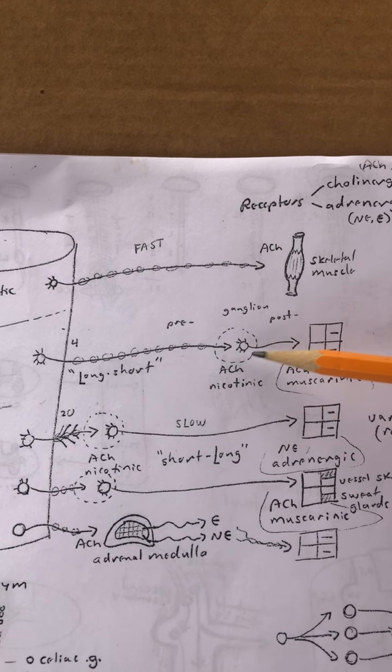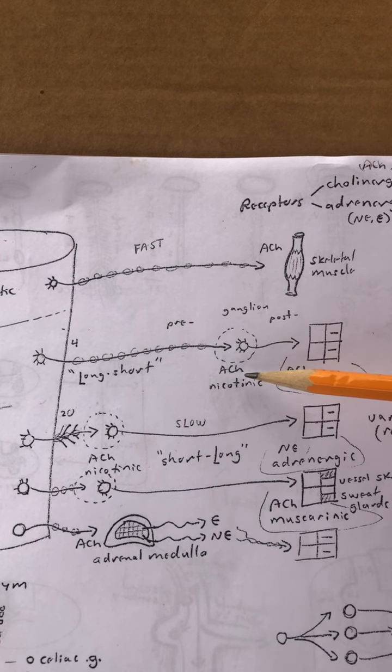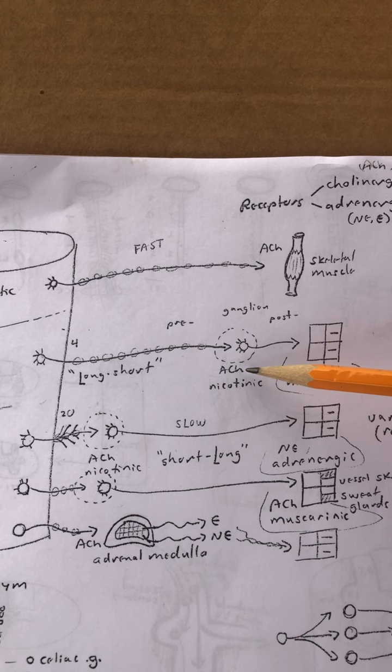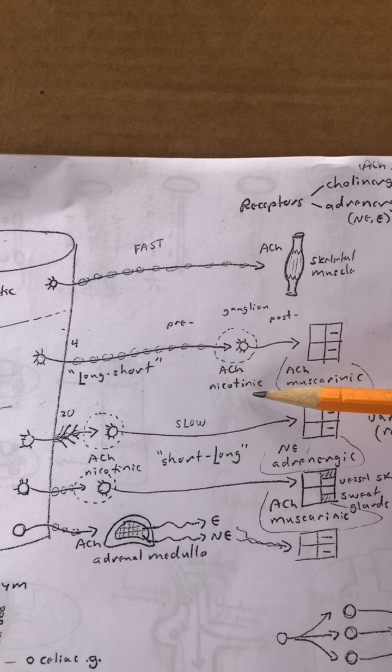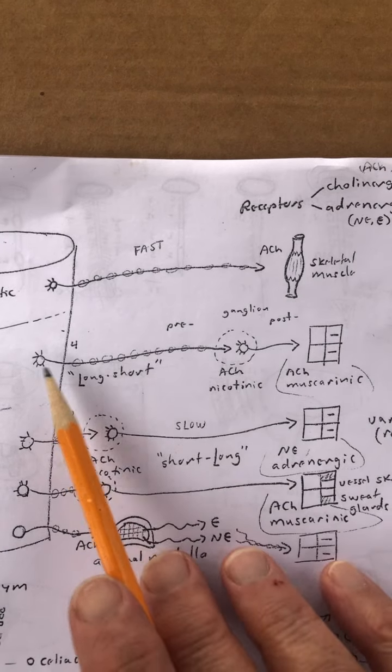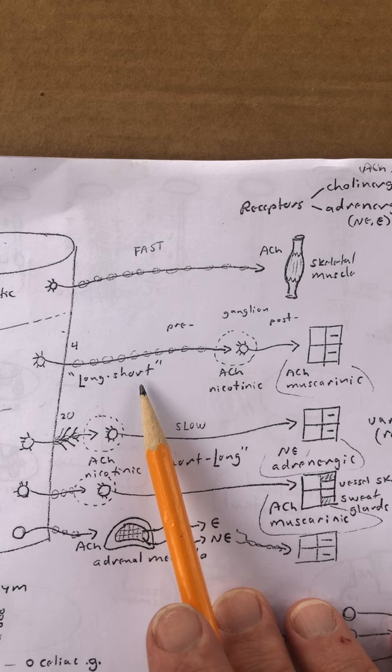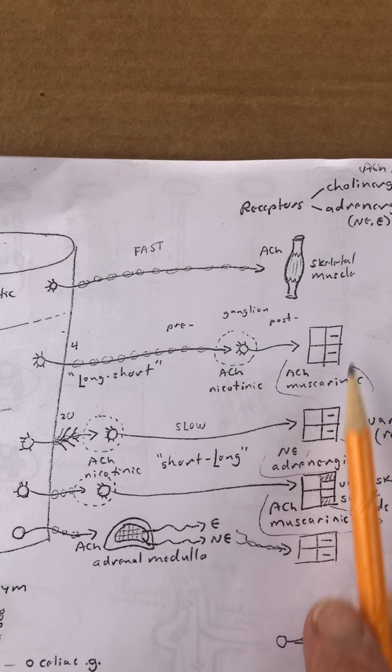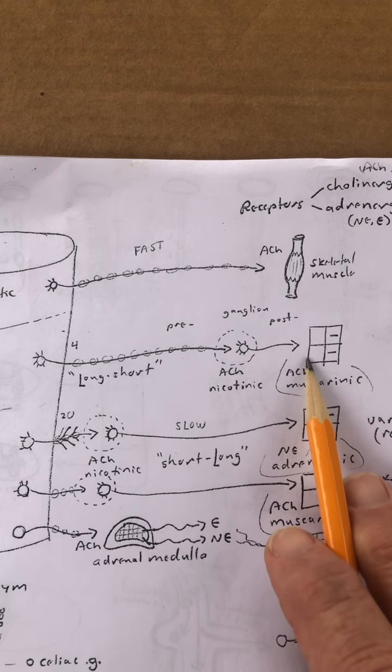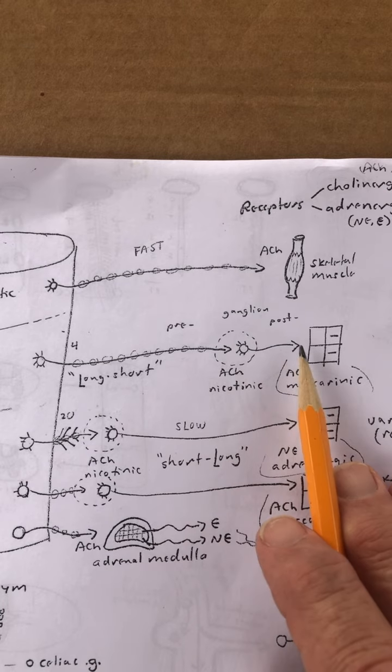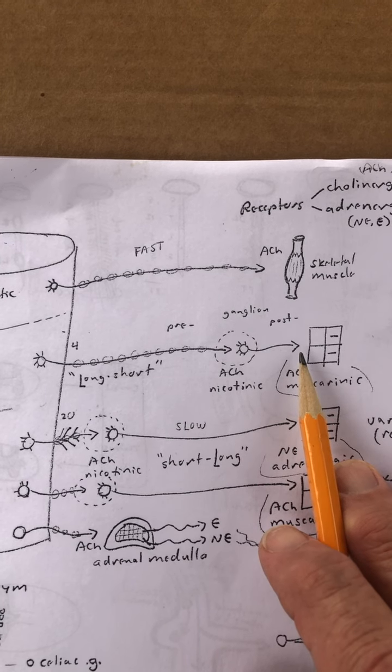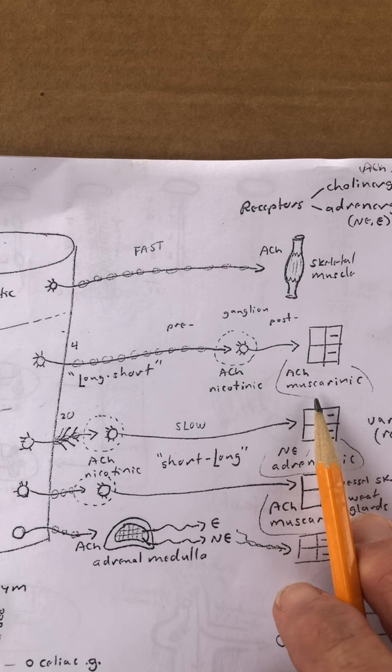Now inside this ganglion right here at the synapse, acetylcholine is the neurotransmitter and that is a nicotinic receptor. So two to get out there, and the first one's long, the second one's short. The second one is right there at the surface. Now at the surface there's a second synapse, there's two synapses. Acetylcholine is still being used right there, but now the receptor is muscarinic.